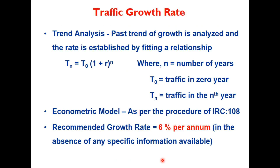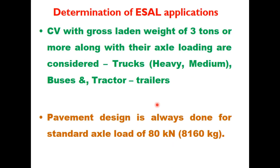Traffic growth rate is estimated either by past trends, an econometric model as given in IRC 108, or assumed as 6% in the absence of specific information. Traffic for the design of a rural road is taken in terms of ESAL — equivalent single axle load applications — and commercial vehicles with gross laden weight of 3 tons or more, along with their axle loading, are considered.